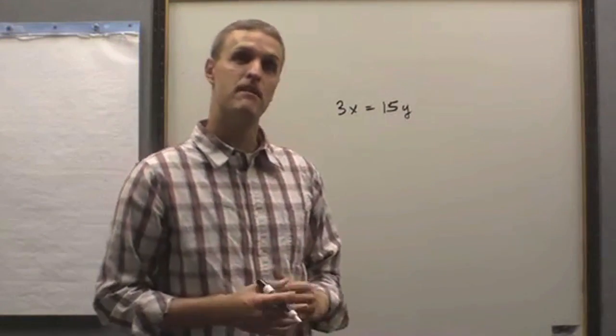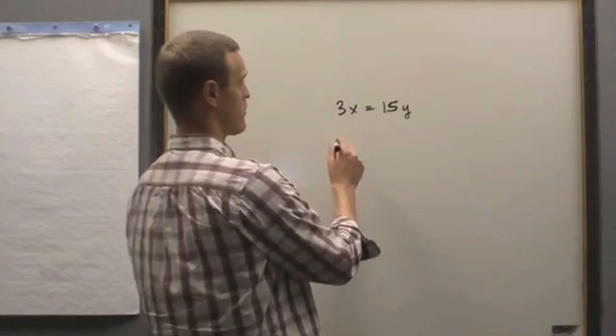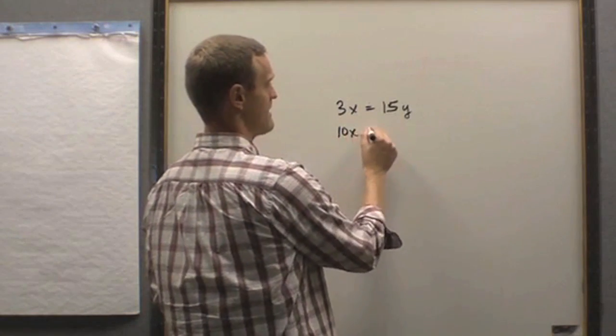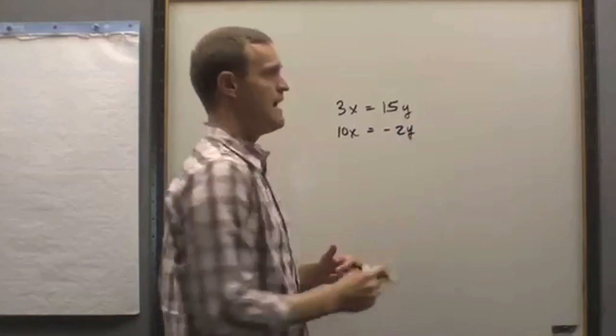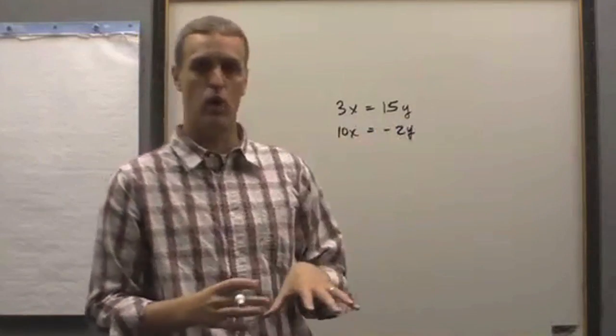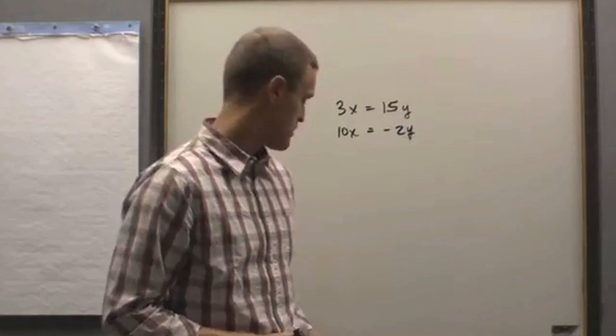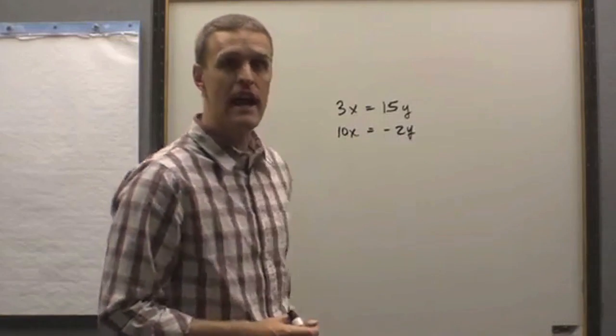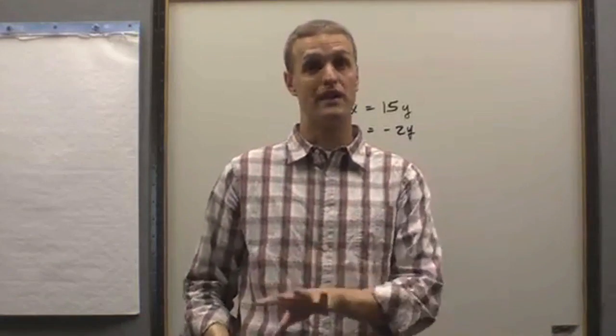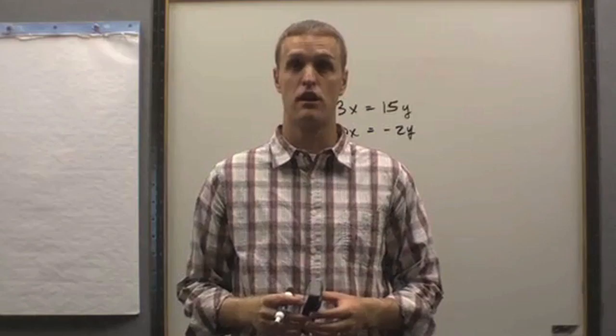However, if I now give you a second equation, for example, 10x equals negative 2y, now I have two separate equations. I can solve those two variables. We call those simultaneous equations, and of course, if you have three variables, you will need three equations to solve for those three variables.